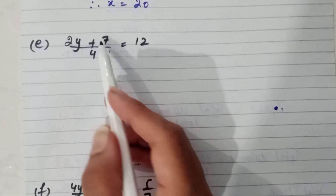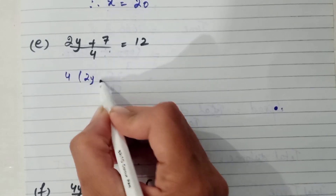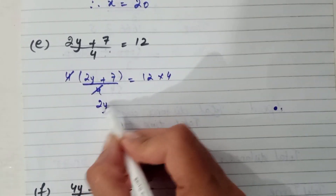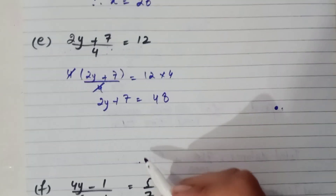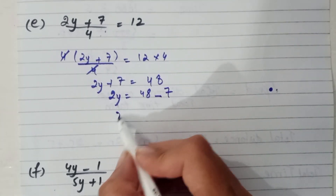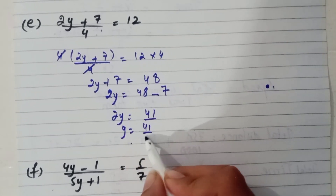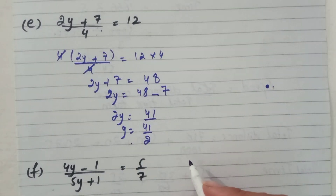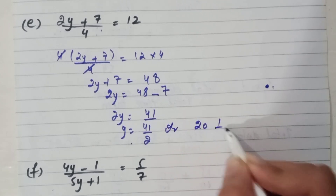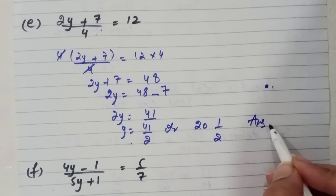Part e: to eliminate the denominator, we multiply both sides by 4. We get 4 times (2y plus 7) equals 1/4 times 12 multiplied by 4, giving 2y plus 7 equals 48. We subtract 7 from 48 to get 41, then divide by 2. This is an improper fraction written as a mixed number: 20 and 1/2. That is the answer of part e.